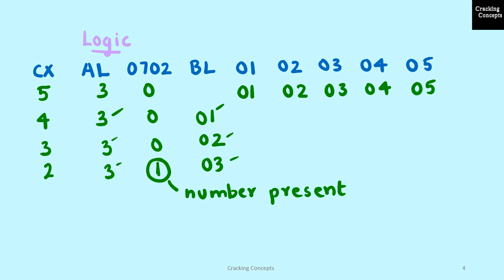Now we look into the logic of both cases. We have the CX register, AL, BL, and location 0702 acting as the flag, along with the series of numbers. Before beginning the comparison, we decrement the value of CX by 1, so it becomes 4. AL contains the value to be searched for, which is 3. Each value from the series is copied to BL and compared with AL. If they are not the same, we decrement CX and copy the next value to BL.